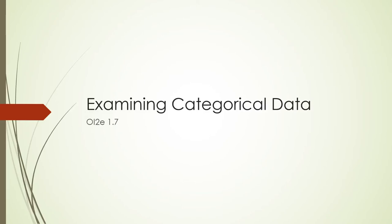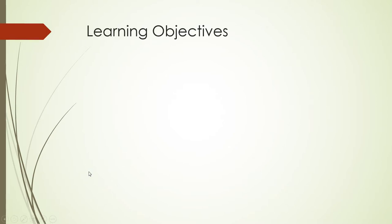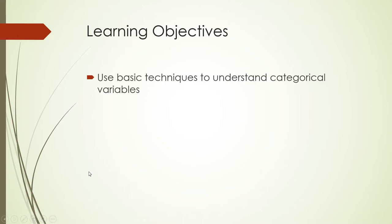Let's get started with this lecture. This is the second of the B3 lectures, talking about examining categorical data. In this case, we're going to be talking about bar charts.